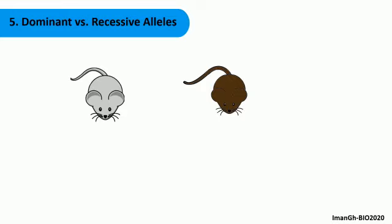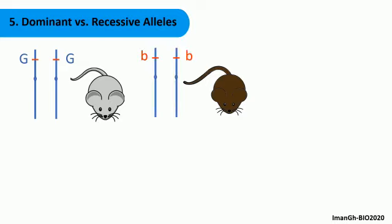Two homozygous mice for the fur color are crossed with each other so that they can reproduce. The first mouse has gray fur and its genotype is GG. The second mouse has brown fur and its genotype is BB.